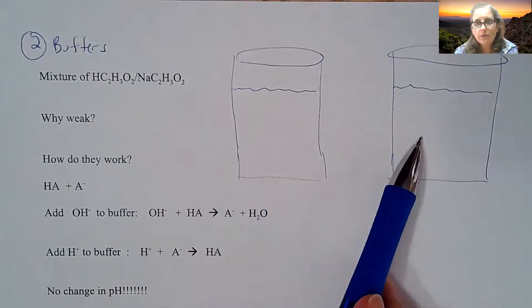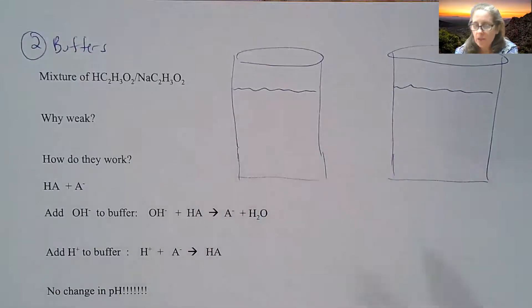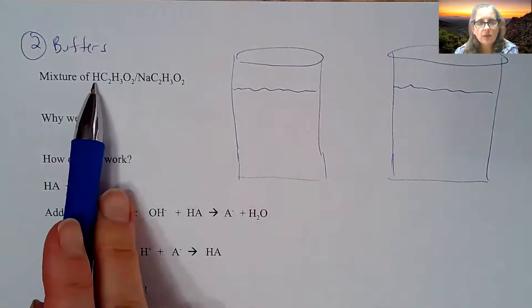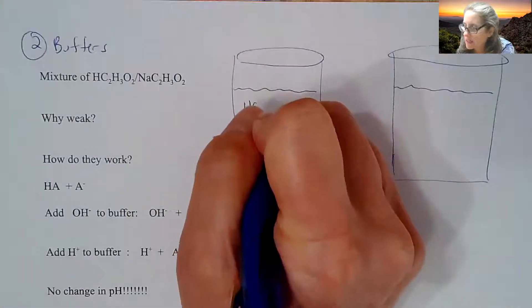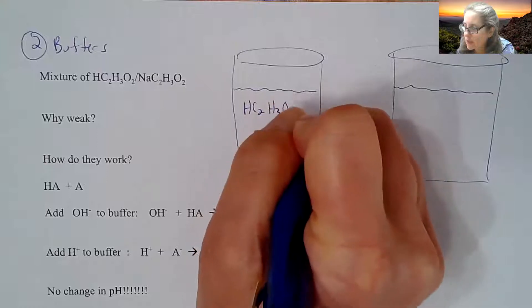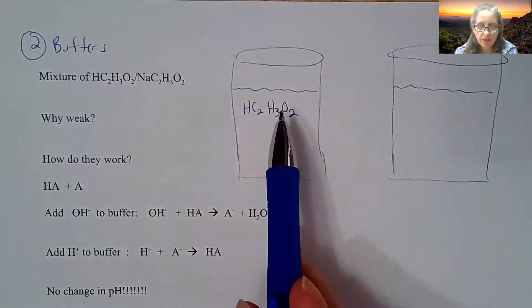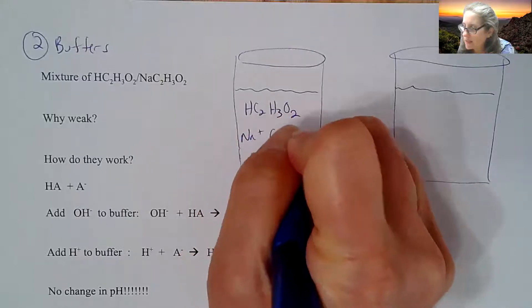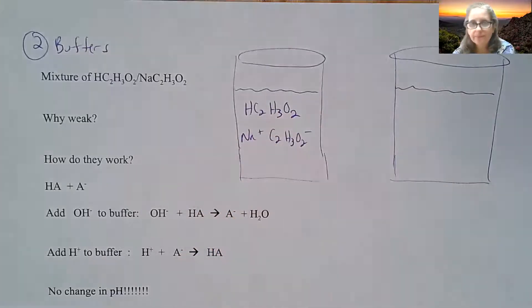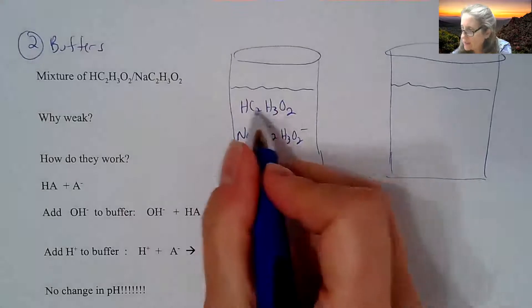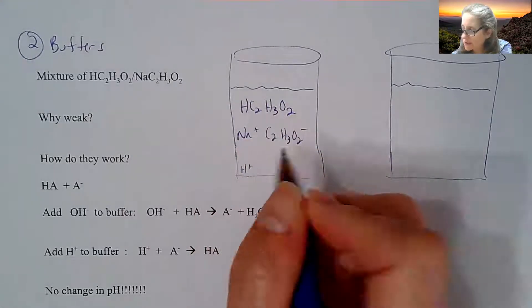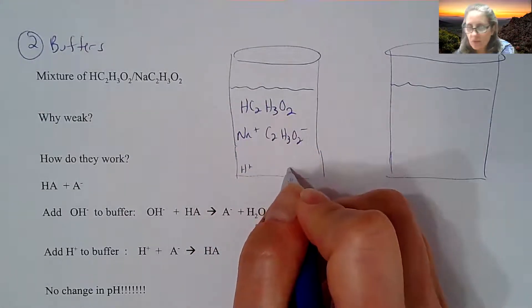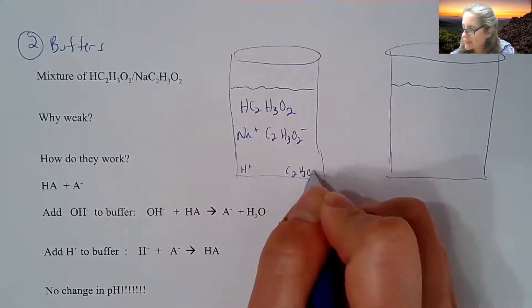Draw yourself two different beakers here, and we're going to draw what is the dominant species floating around in there. If I have a mixture of acetic acid and sodium acetate, acetic acid is going to be a pretty big component in there. I'm going to have Na+ and then acetate ion, and then the acetic acid is going to break up a little bit. So you're going to have the tiny, tiny little H+ and tiny, tiny little acetate in there.